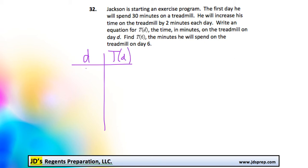Okay, so on day one, he's going to do 30 minutes on the treadmill. And it says he's going to increase the time on the treadmill by 2 minutes each day. So on day two, it would be 32 minutes. Day three would be 34 minutes. Day four would be 36 minutes, and so on.